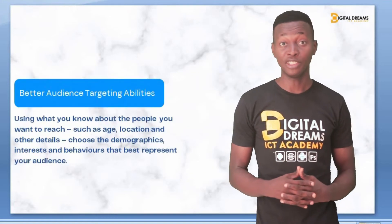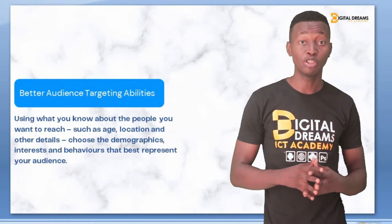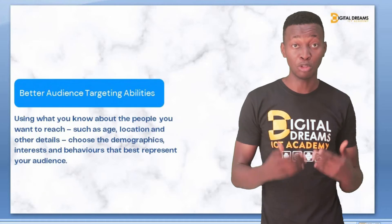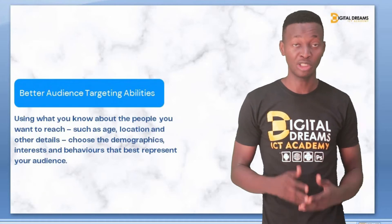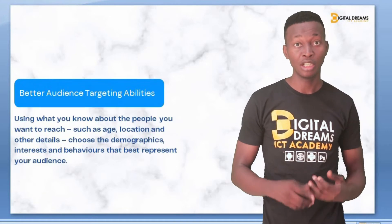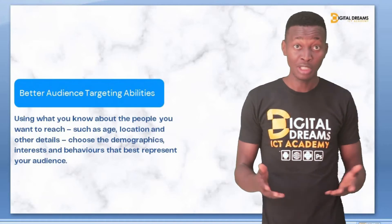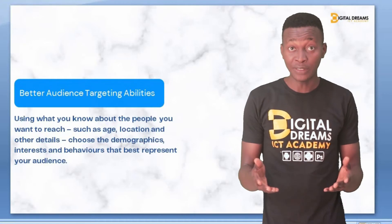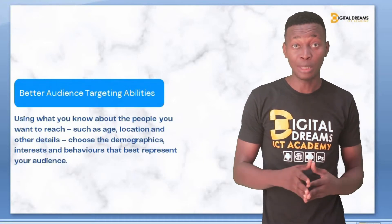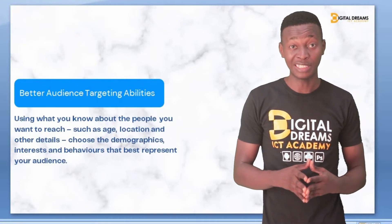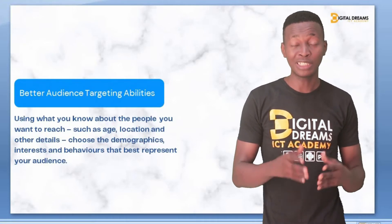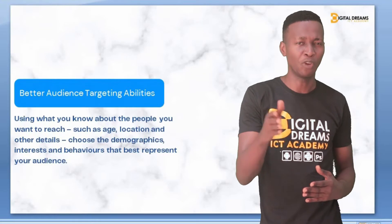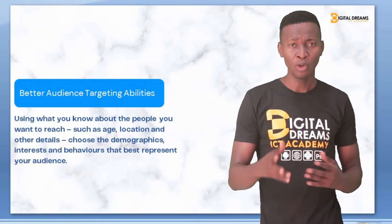With better targeting abilities, you can use what you know about the people you want to advertise to — such as their age, location, demographics, interests, where they live, and what they are most interested in — to get across to just the particular type of audience you want to advertise to.